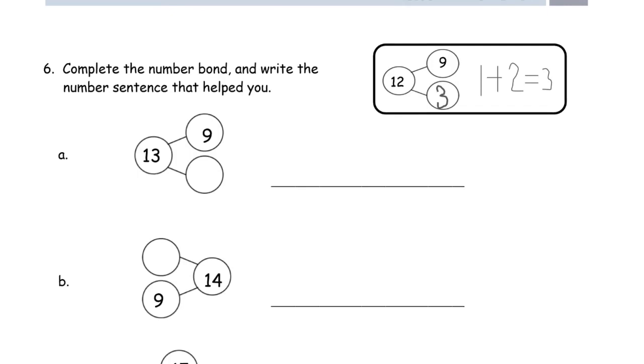Now we're completing a number bond and writing the number sentence that helped you. So here is the example. They finished the number bond here. Then they figured out that had to be 3 because it's one more, right? Because that would make 10. 9 and 1 would be 10. And then the 2 from the 12. I'll show you the first one in detail.